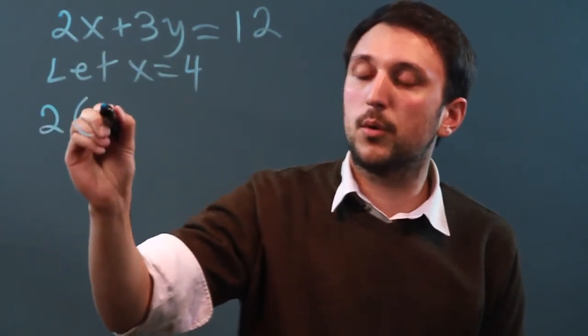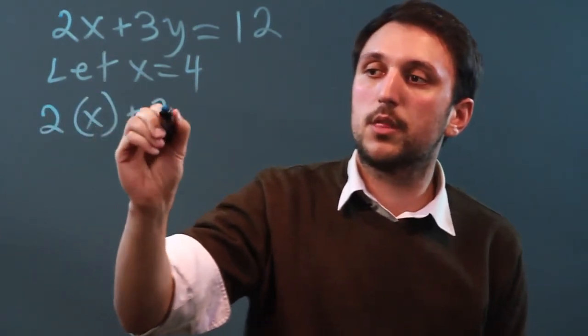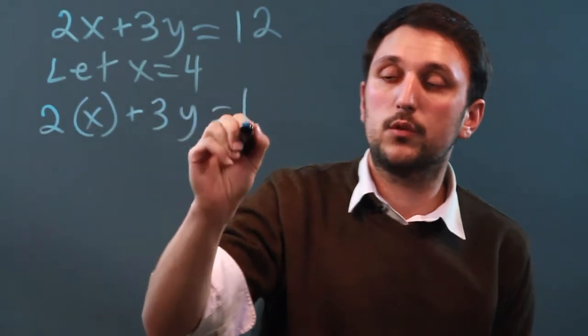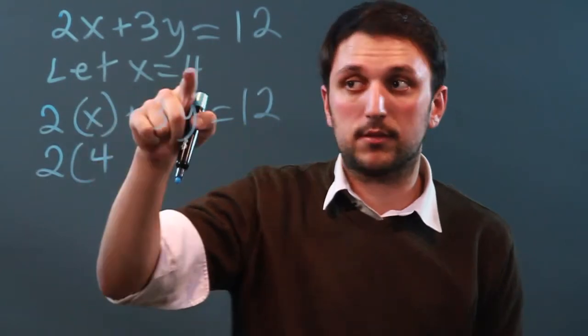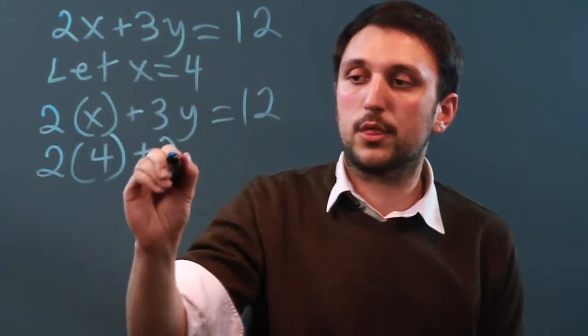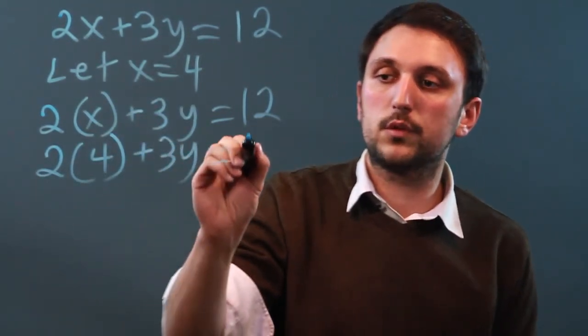So 2 parentheses x plus 3y equals 12. Then we can say 2 times 4 because x equals 4, plus 3y equals 12.